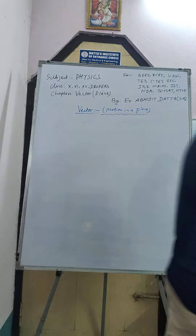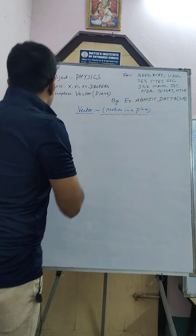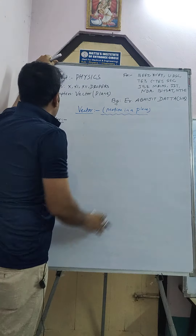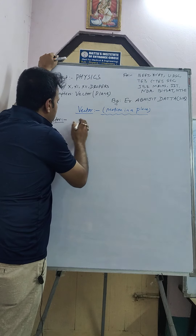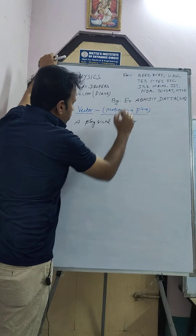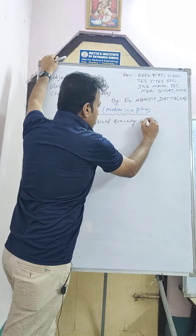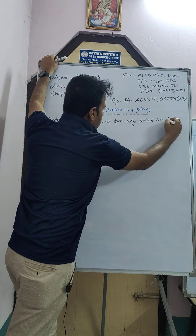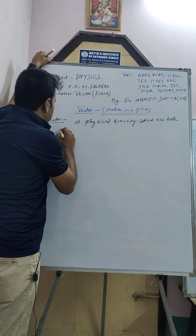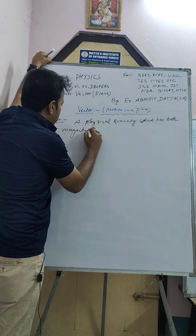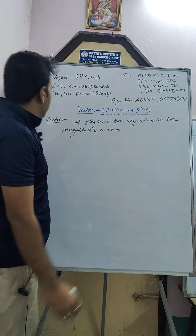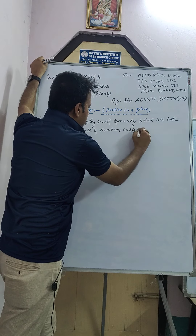So first we have to know what is a vector. A vector means a physical quantity which has both magnitude and direction. It is called a vector quantity.